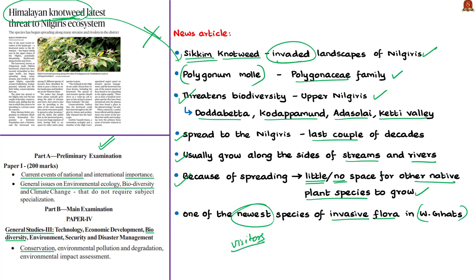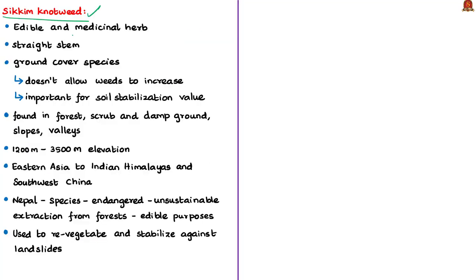Polygonum mole is an edible as well as a medicinal herb — edible meaning it is fit to be eaten. It is an herb with straight stems that can grow up to 1 to 1.5 meters tall. It is found as a ground cover species — plants that grow thickly and close to the ground. Ground cover species have the purpose of holding the soil in place.